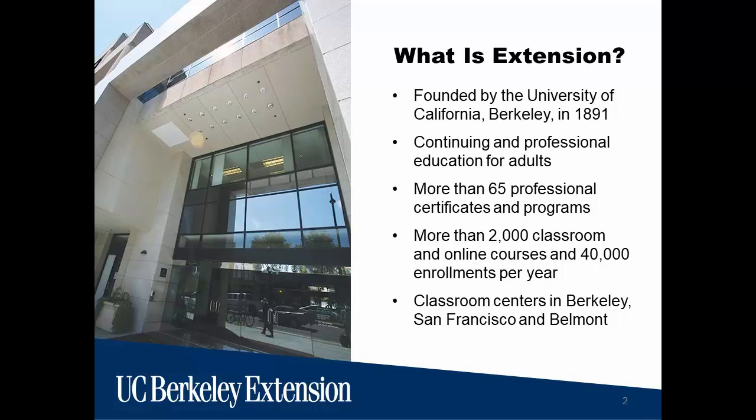UC Berkeley Extension was founded by the University of California Berkeley way back in 1891, shortly after UC Berkeley itself was established, making us the second oldest extension in the country — second only to Harvard Extension. UC Berkeley Extension is the continuing education and professional education division of UC Berkeley. We provide more than 65 different professional and certificate programs across a wide educational array, everything from art and design to writing and editing to math and biotechnology. Each year, Berkeley Extension provides more than 2,000 individual classes and we have close to 40,000 enrollments each year.